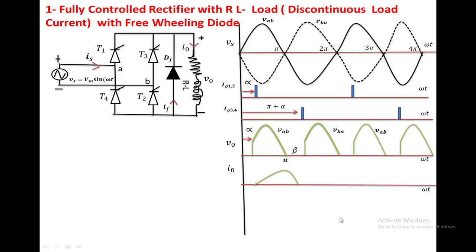Looking at the load current waveform: from alpha to pi, the current increases to its maximum value. After pi, the current decreases through the freewheeling diode — this current is not coming from T1 and T2. The decreasing current flows through the freewheeling diode (represented as IF) up to angle beta, where the current reaches zero. This pattern of IF repeats each half cycle.